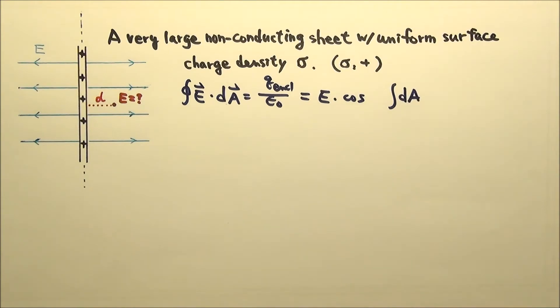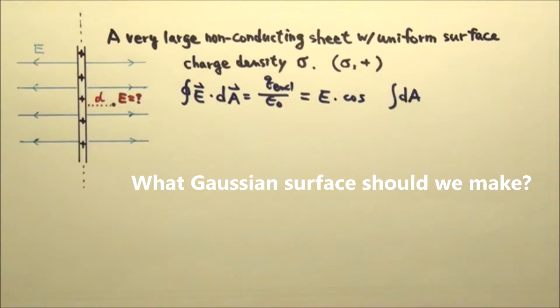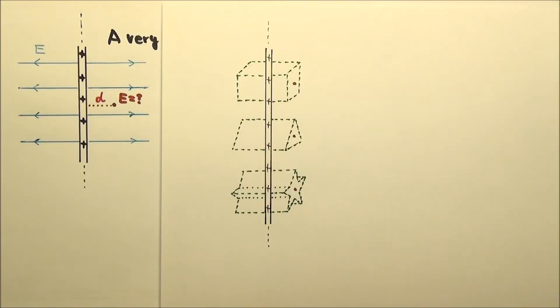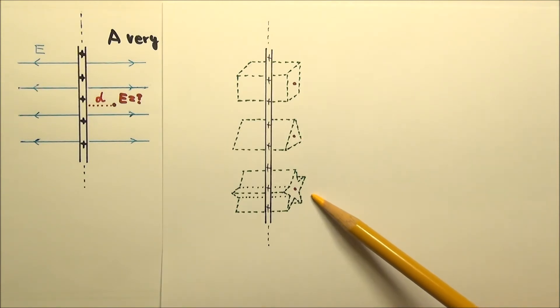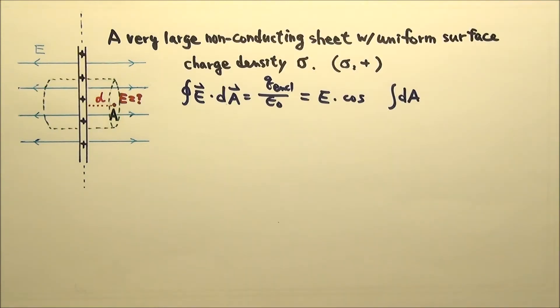What Gaussian surface should we make? To take advantage of the planar symmetry, we can make a rectangular prism or a triangular prism. We can even make a star-shaped prism. But for convenience, I would make it a cylinder.